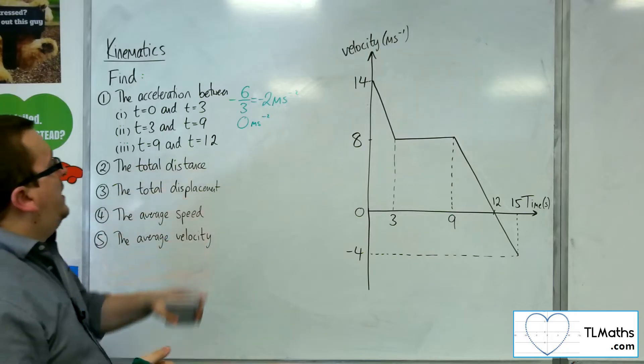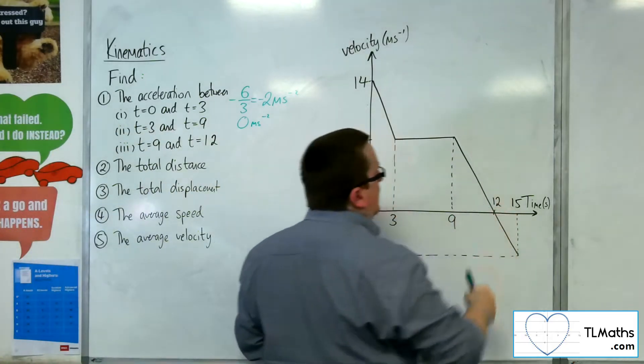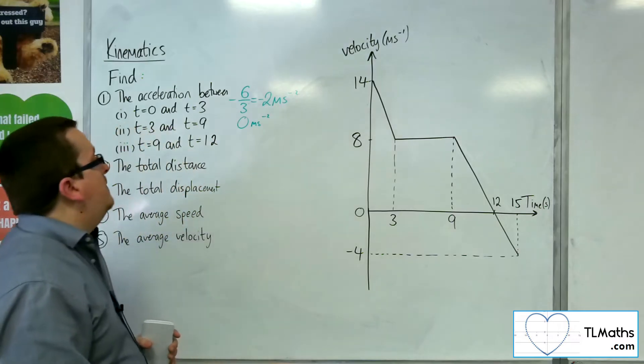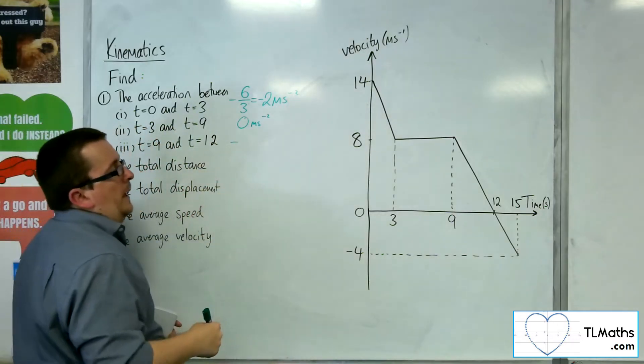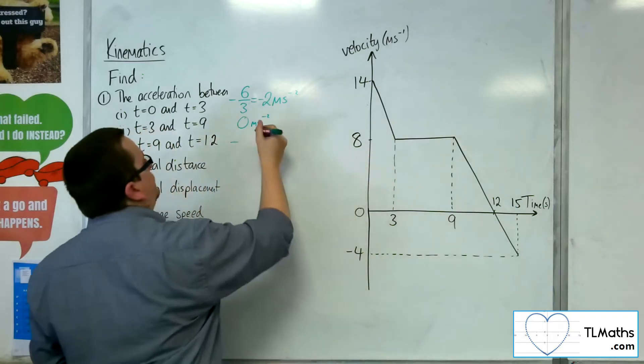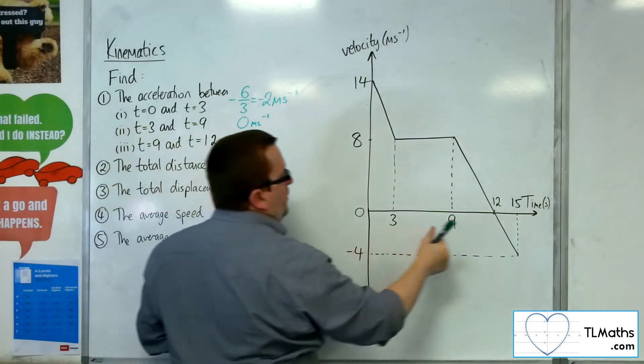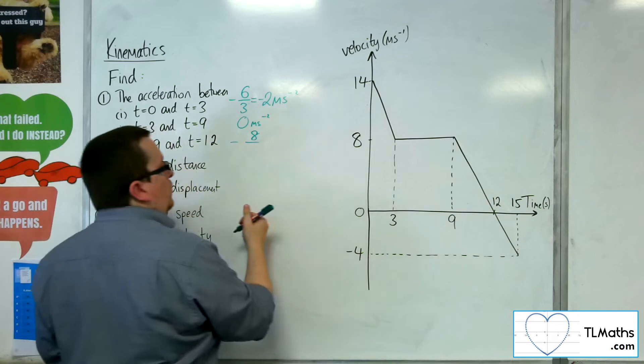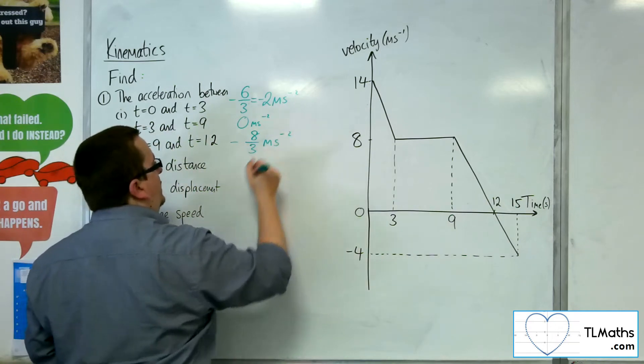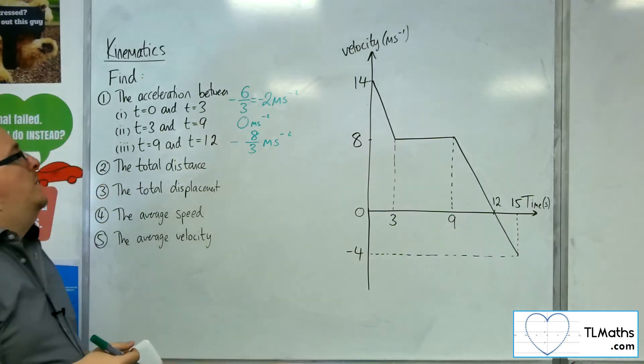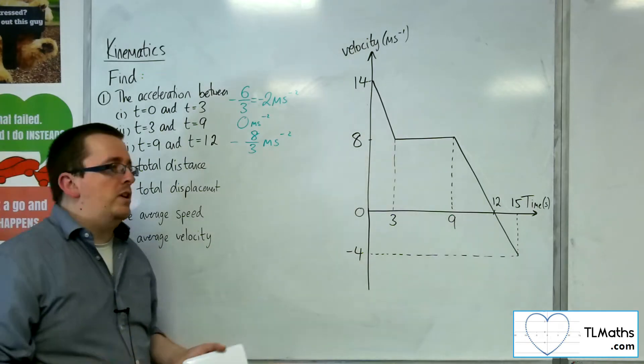Then between T is 9 and T is 12, so for this section here, we are decelerating again. So we're going to have negative, because we're going downwards. The difference in the y is 8, divided by the difference in the x, which is 3, so minus 8 thirds metres per second per second. So minus 2.6 recurrent.